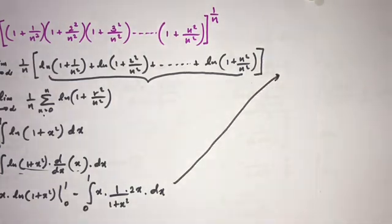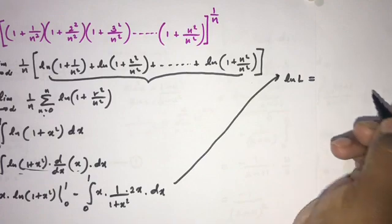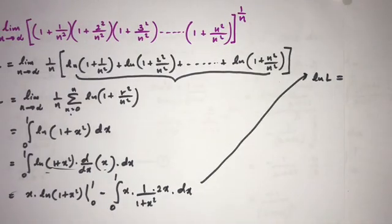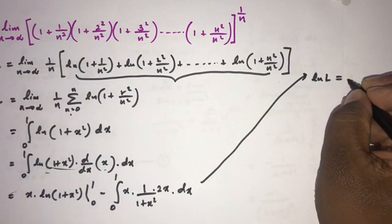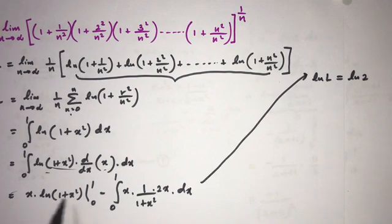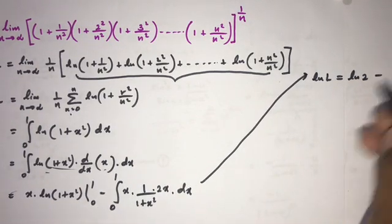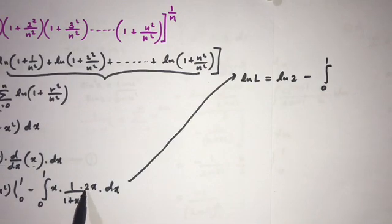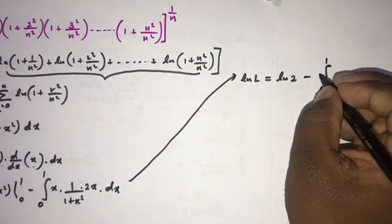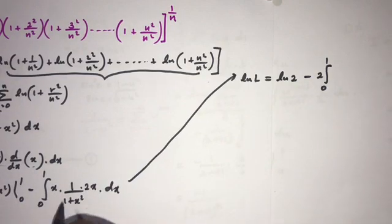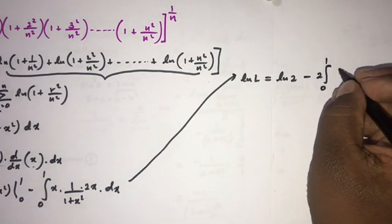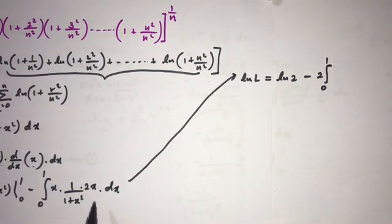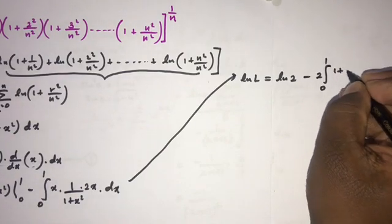So natural log of L equals: plugging in 1 gives 1 · natural log(1 + 1) = natural log(2); plugging in 0 gives 0. Then we subtract the integral from 0 to 1, where 2 is factored outside, leaving x²/(1 + x²). We rewrite the numerator as (1 + x²) − 1 over (1 + x²).